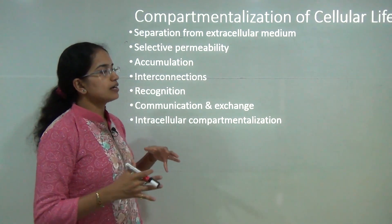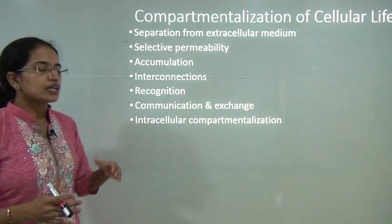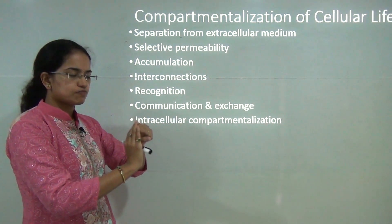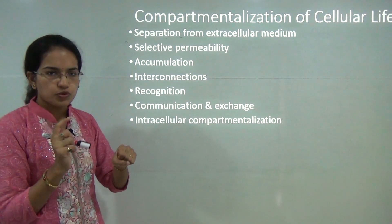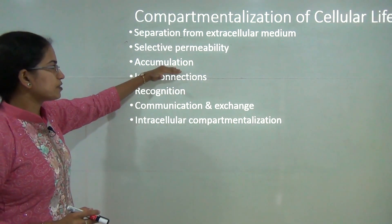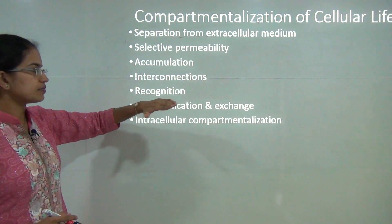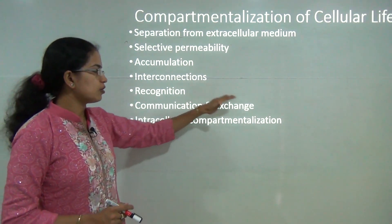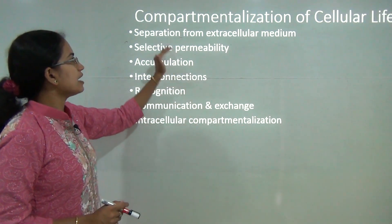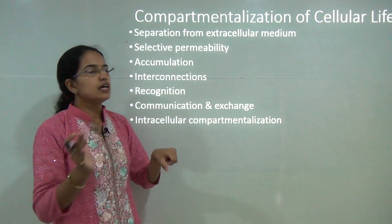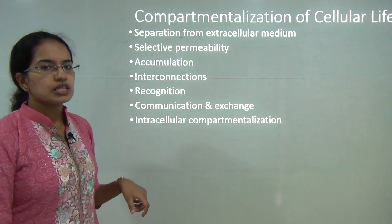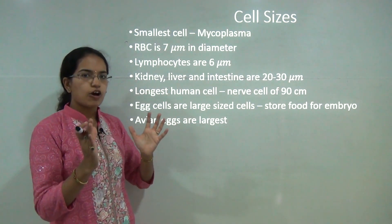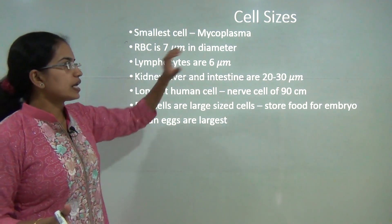Cells have selective permeability — they allow certain things to move in and certain things to move out. They provide accumulation, interconnections, and recognition for specific purposes. They help in communication and exchange, and they separate the cell from the extracellular medium. These are the basic concepts of cellular compartmentalization.